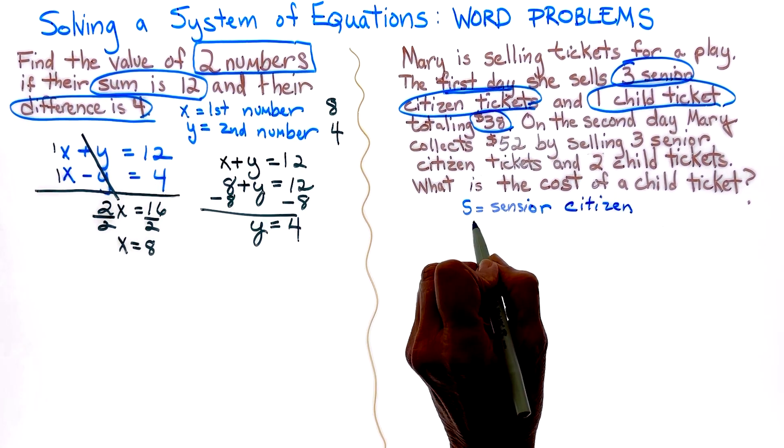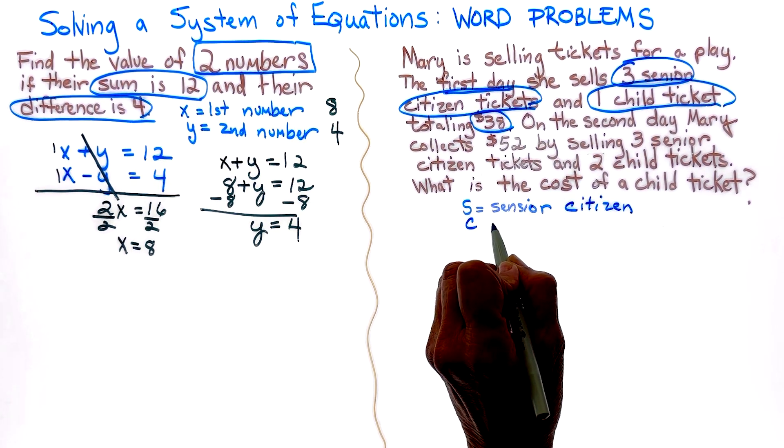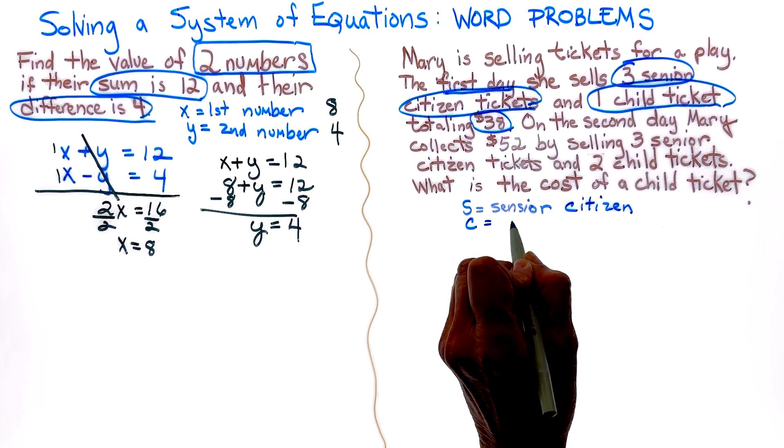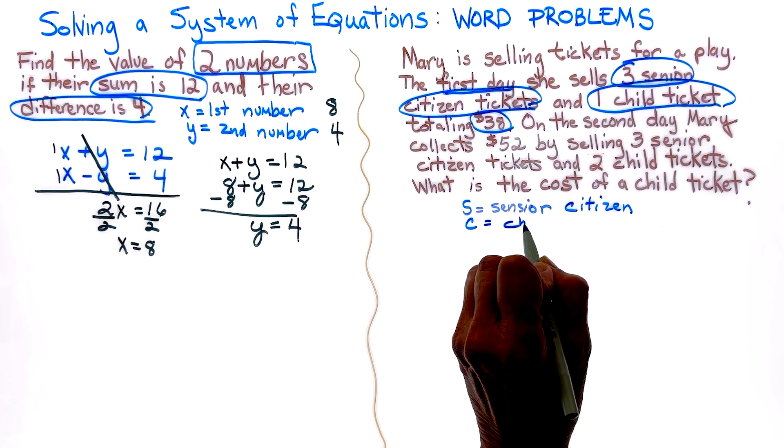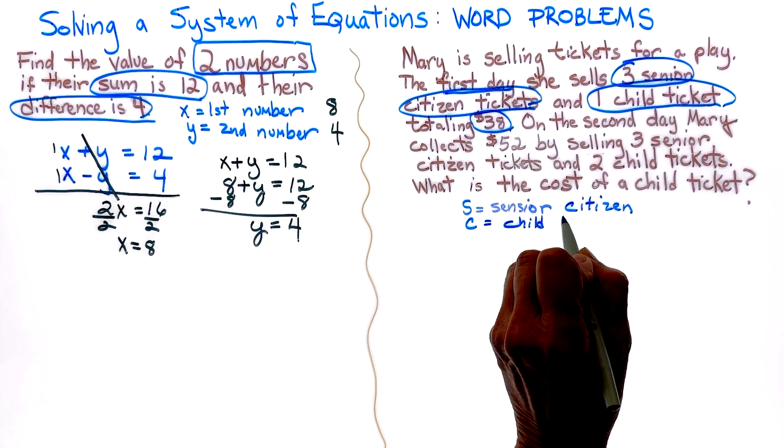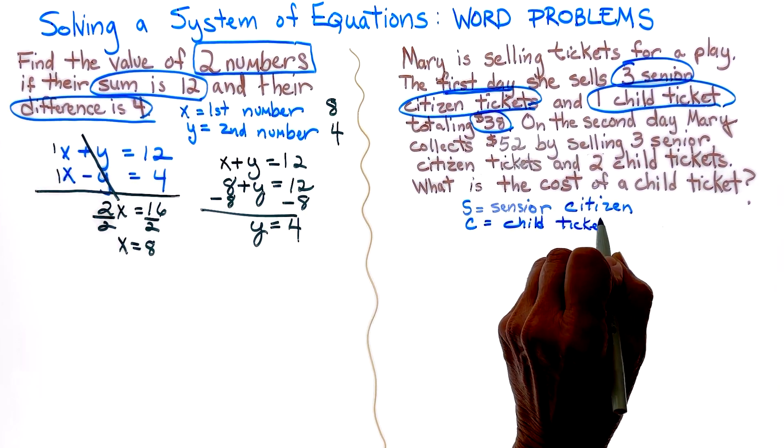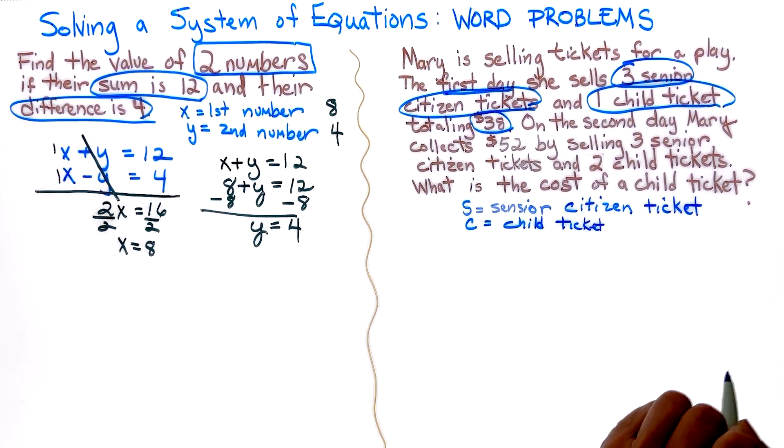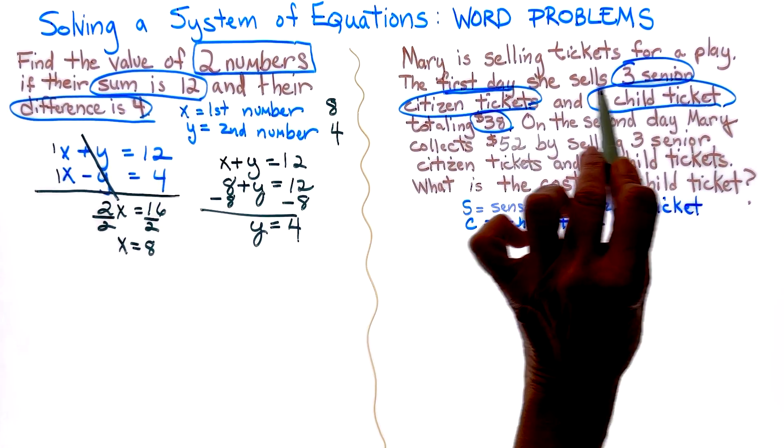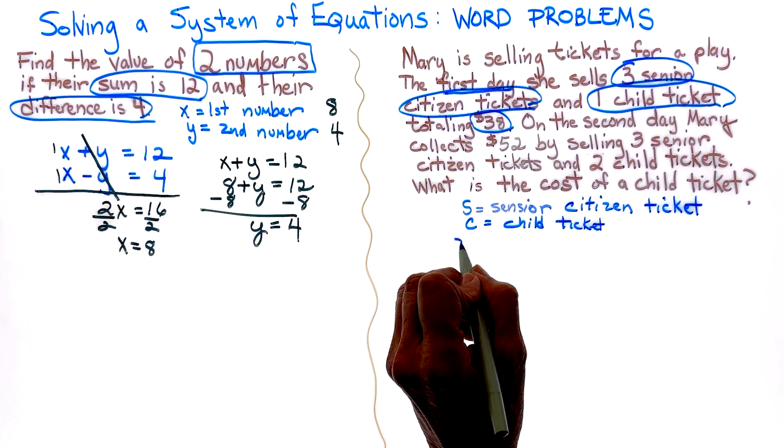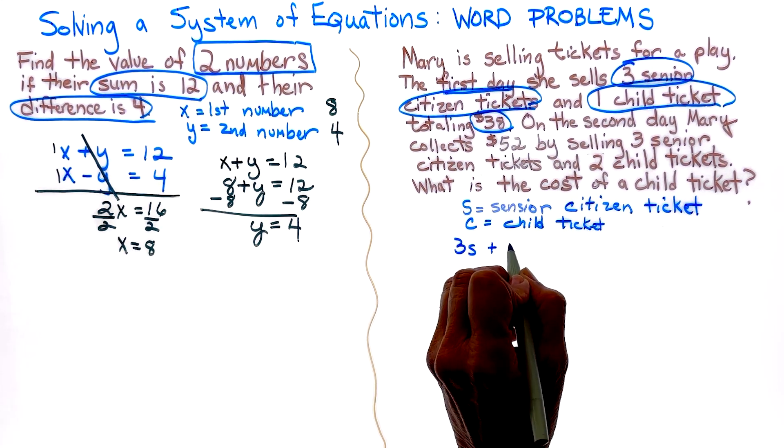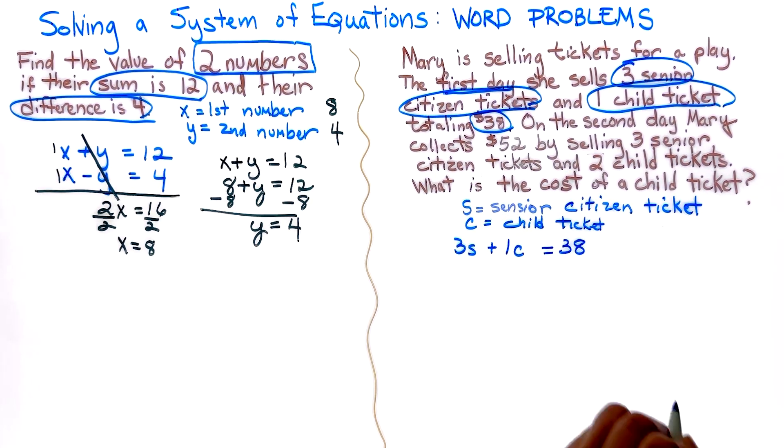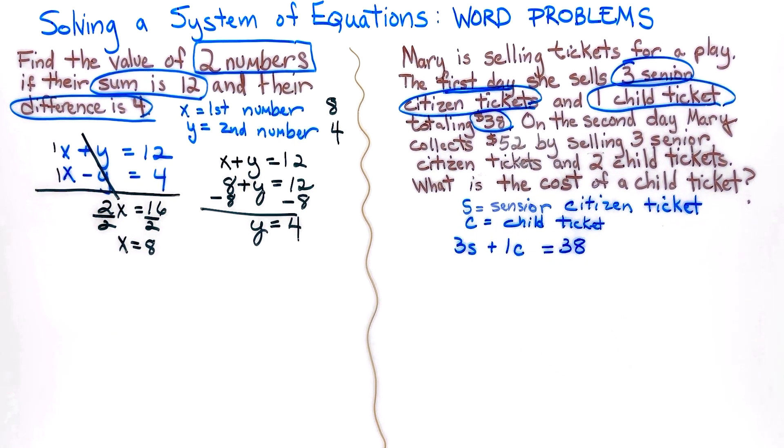And C is going to be equal to our child. Our first equation with what we circled, we have 3S plus 1C is equal to $38. We don't need to write our dollar sign.